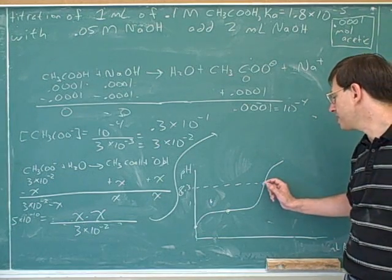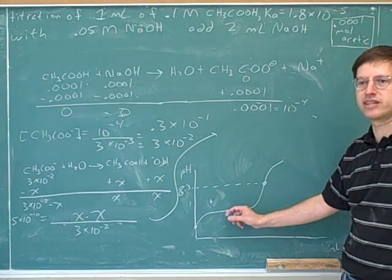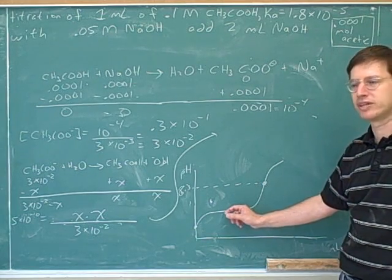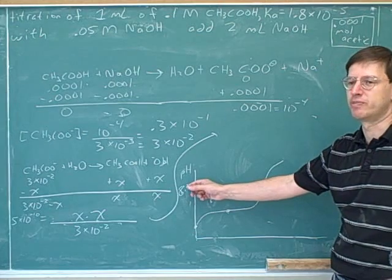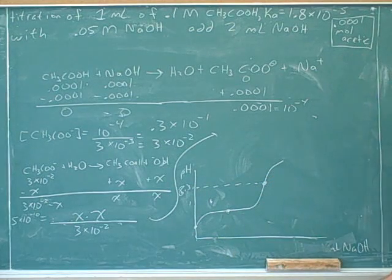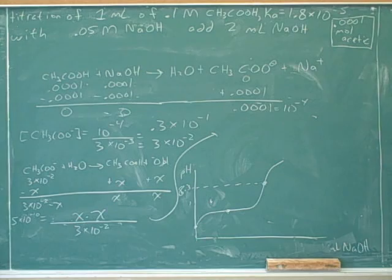So our answer was between 8 and 9. Say 8.3 or something. So now we'd be here. Notice that the equivalence point is still the steepest region on the graph. And of course, this point should be twice as far along the horizontal axis as this point because this was our half-equivalence point. So we know it's between 8 and 9. And the next one I do, I'll have some base left too.